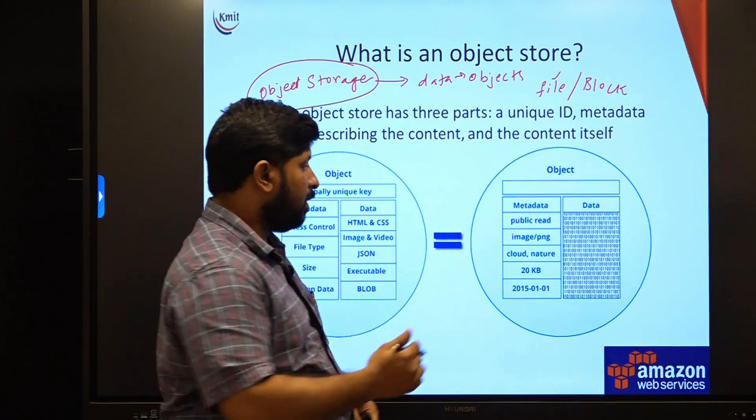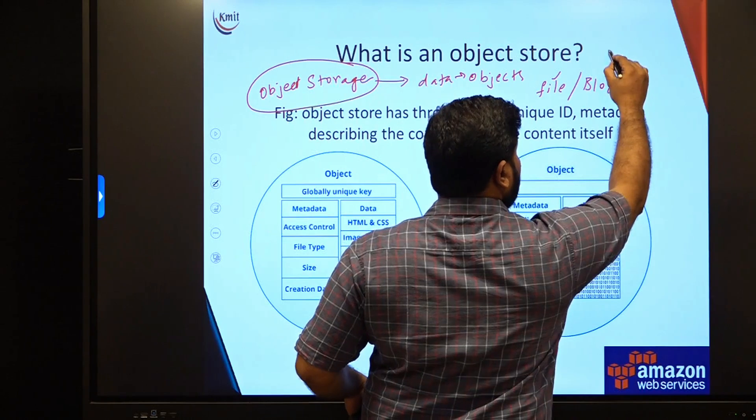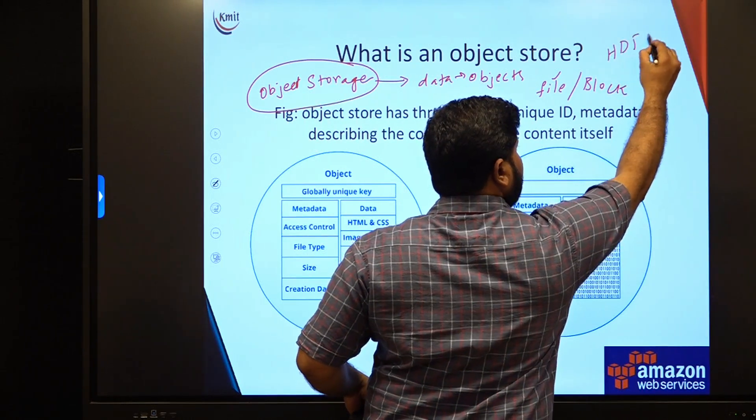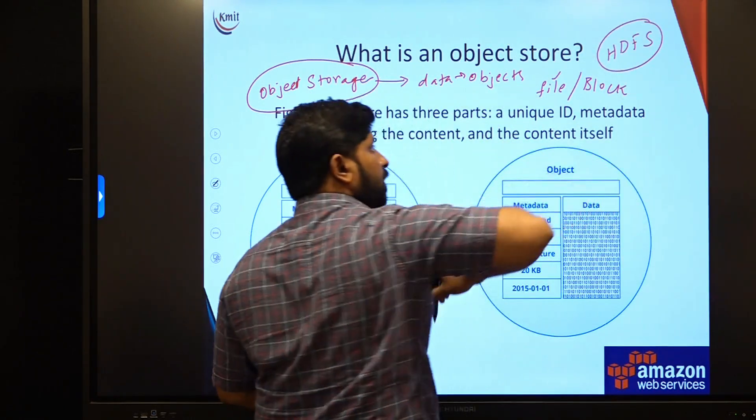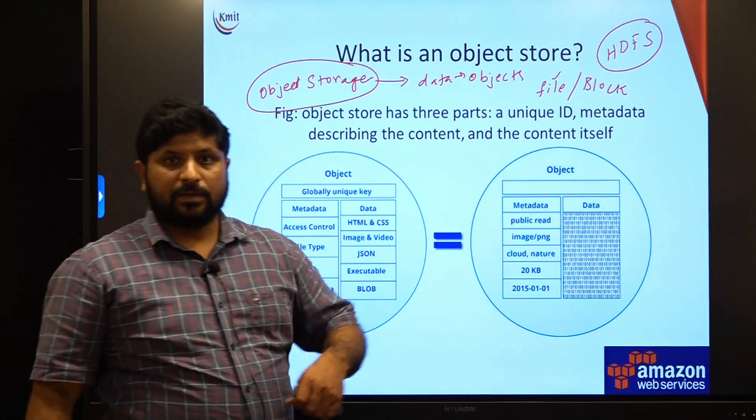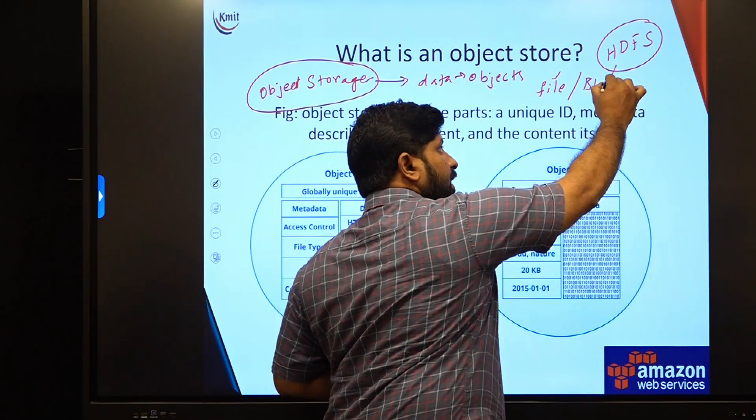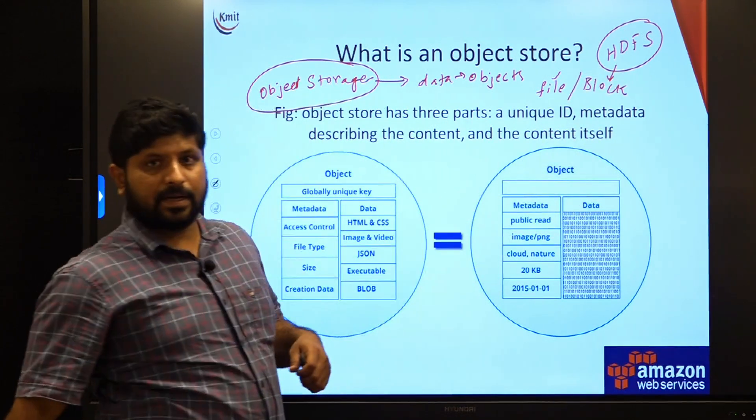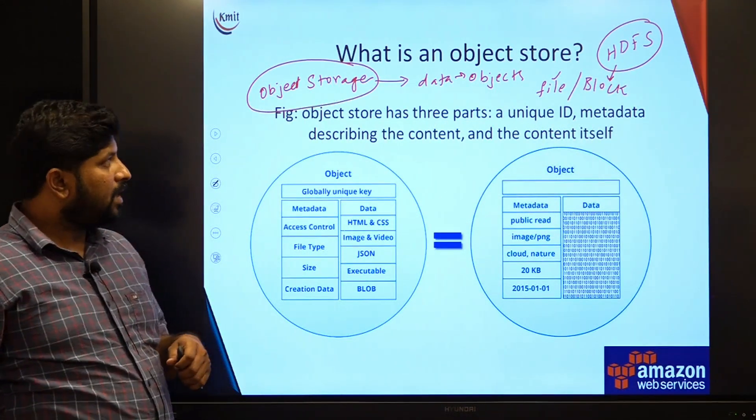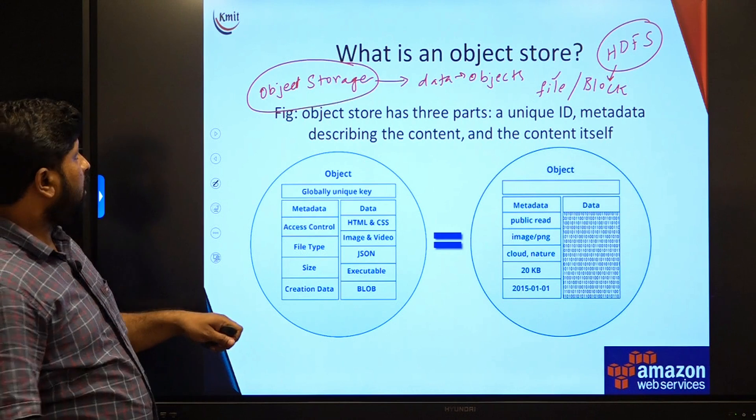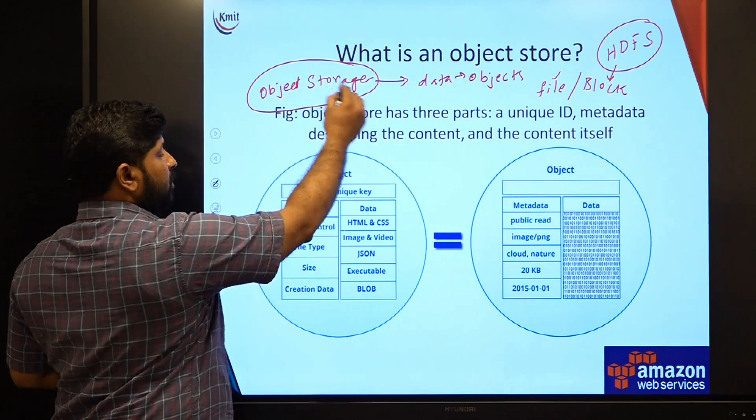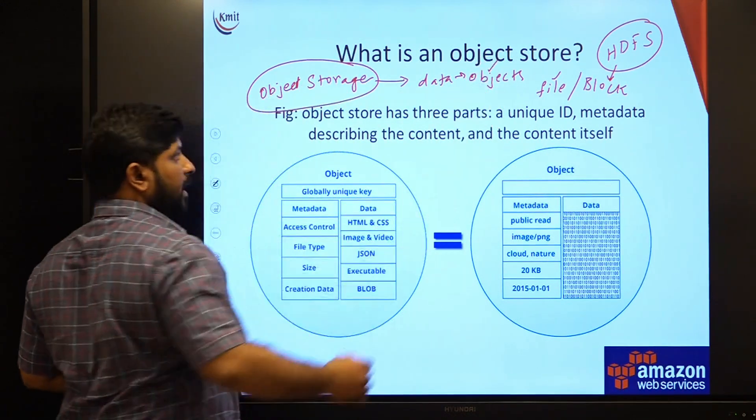Whereas, coming to block storage, such as we have Hadoop cluster where we have Hadoop distributed file system, this is a distributed file system which manages the data in the form of blocks. The data is being managed in the form of blocks. Compared to these two, the data will be stored in the form of objects in object store.